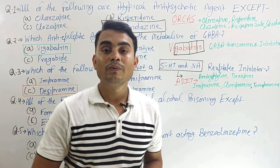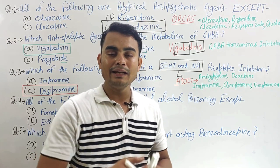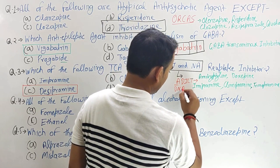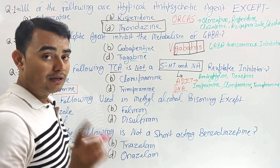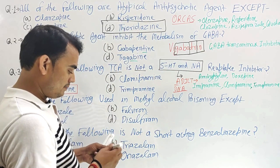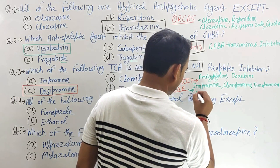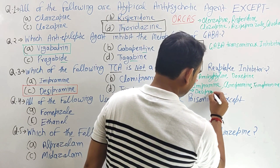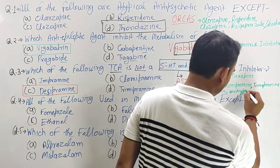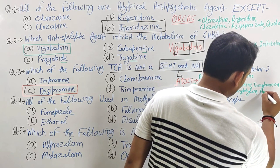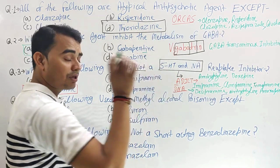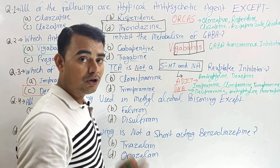Let's also take the drugs which act predominantly by inhibiting noradrenaline. Just remember the word DNA. D for desipramine, N for nortriptyline, and A for amoxapine. These are the three drugs which only or predominantly inhibit noradrenaline reuptake.